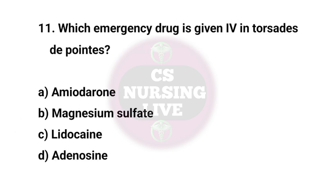Question No. 11. Which emergency drug is given IV for torsades de pointes? Right answer is B. Magnesium sulfate.